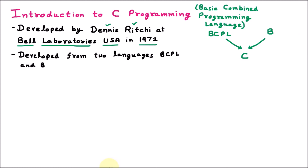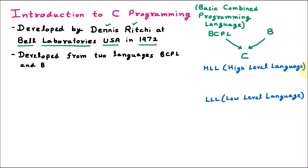There are multiple types of languages. The first type is HLL, called High Level Language. The other type is Low Level Language. High Level Languages are purely in English, while Low Level Languages are in machine-readable form, which is called Machine Language.